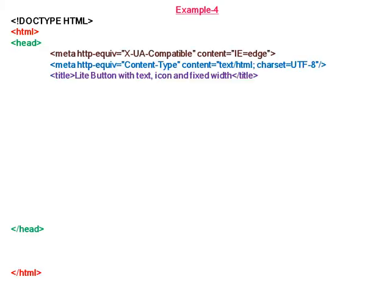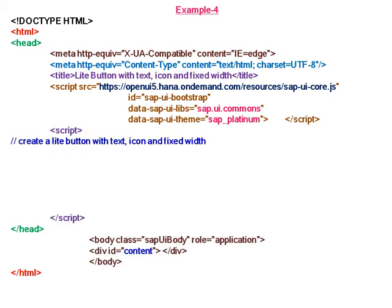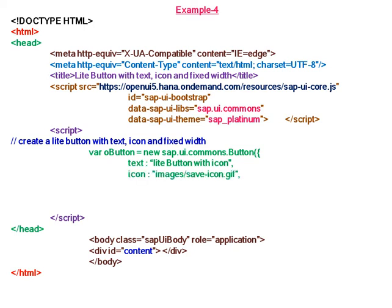In Example 4, we create a light button with text, icon, and fixed width. The theme is Platinum. We create a new button with text 'Light Button with Icon', and the icon is a save icon saved in the images folder. The width is 200 pixels, and the button will be light, so we write true for the property light.